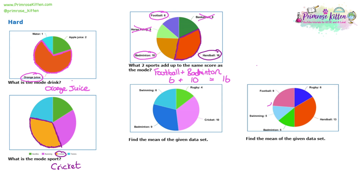Now we're going to find the mean of pie charts — it's the same as a bar chart. Add up all the numbers: badminton is nine, swimming is six, rugby is four, cricket is ten. Total is 29. Then divide by how many sections: we have four sections. 29 divided by four gives us 7.25, or seven and a quarter. So the mean number of people in a sport is seven and a quarter.